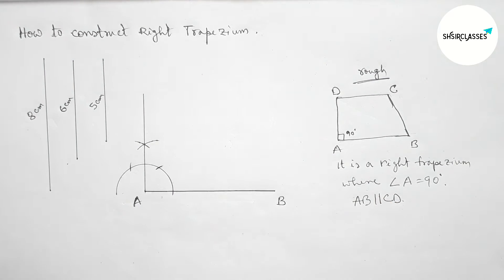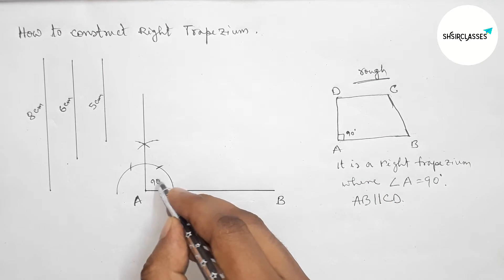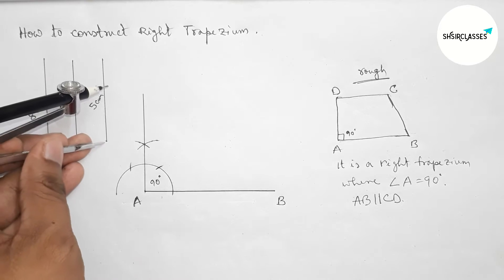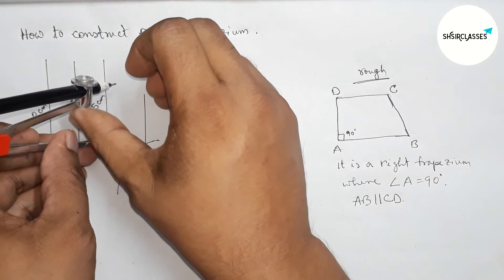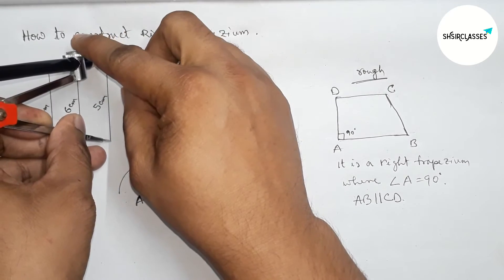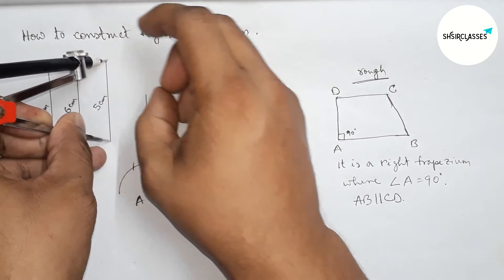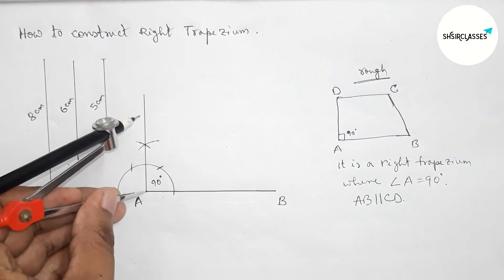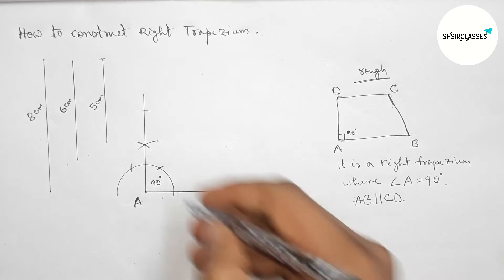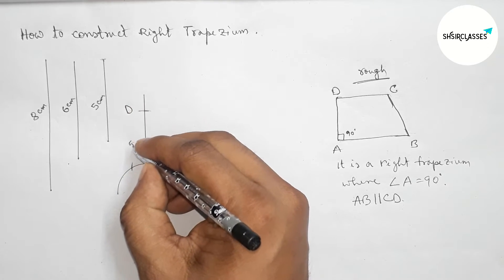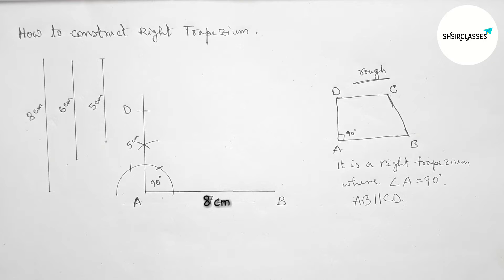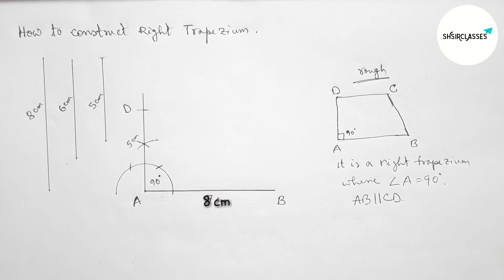After joining the line, we get our 90-degree angle. Next, taking the length of 5 centimeters with the compass. Placing the compass on point A and cutting to mark point D, so AD is 5 centimeters and AB is 8 centimeters.